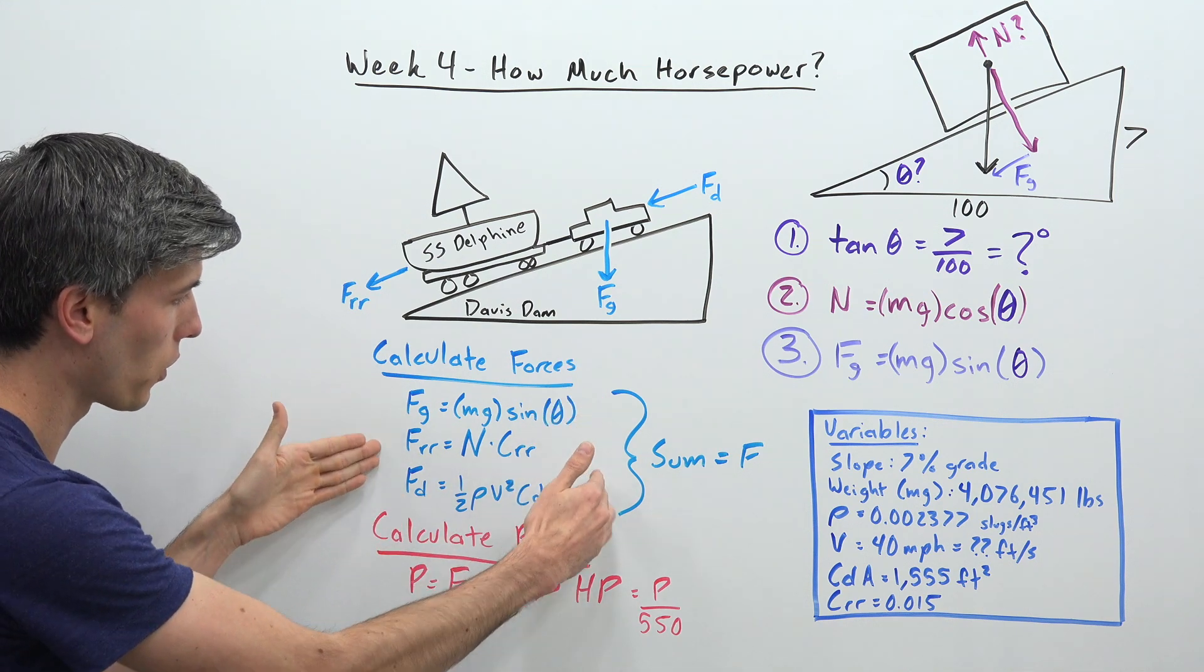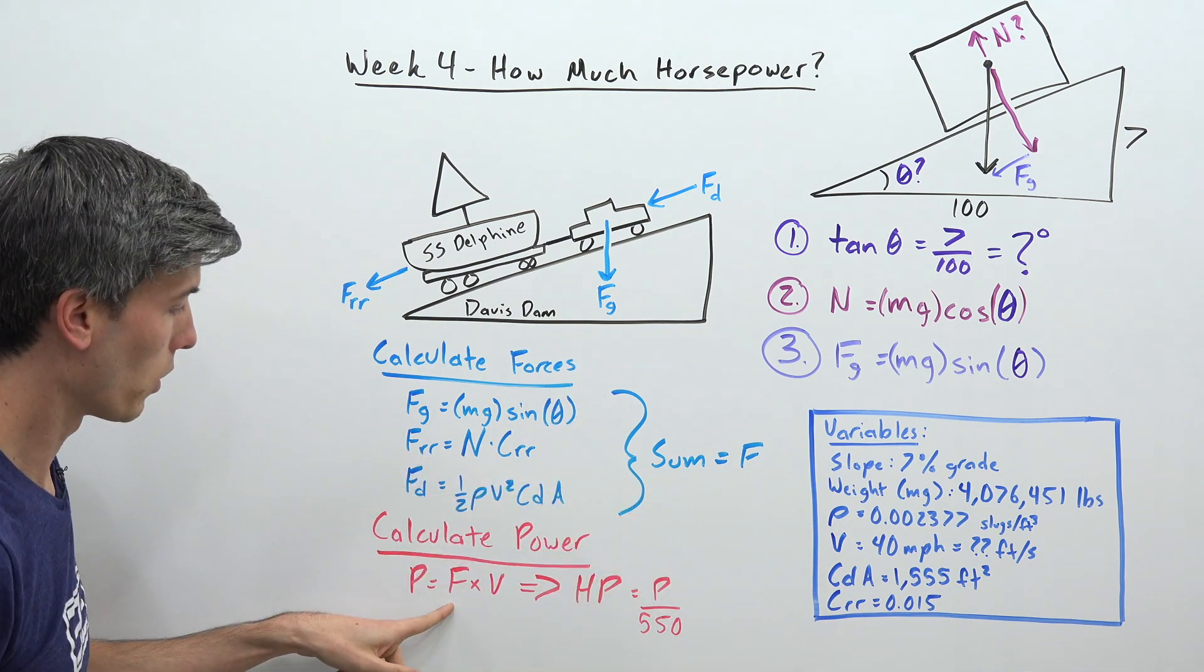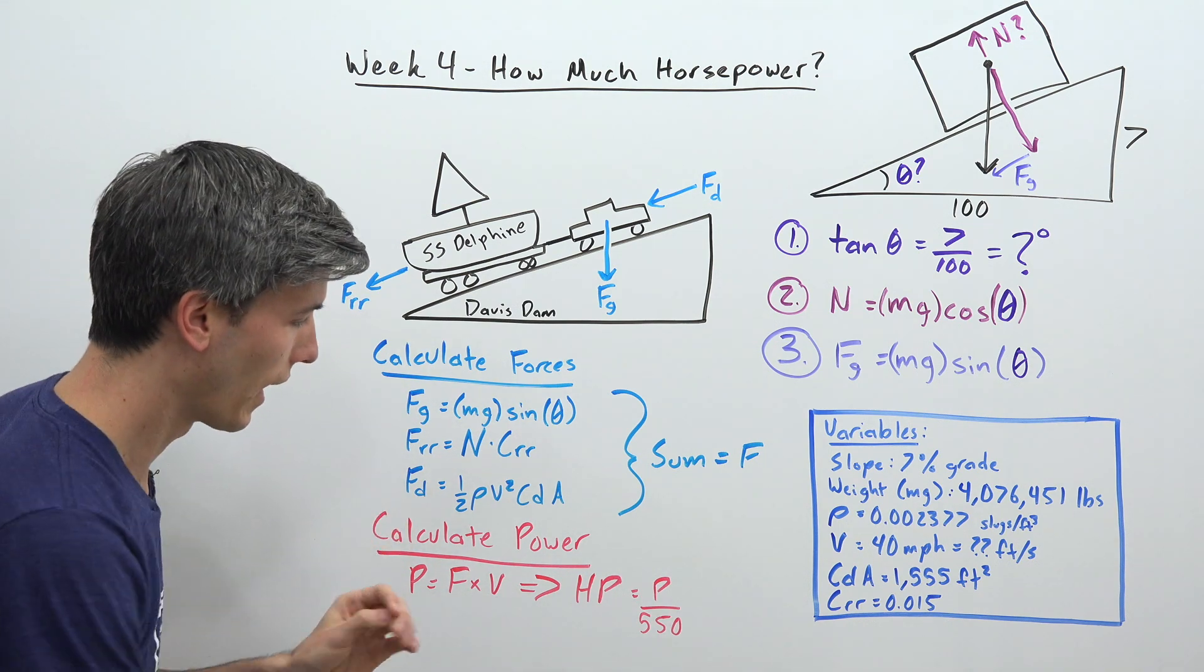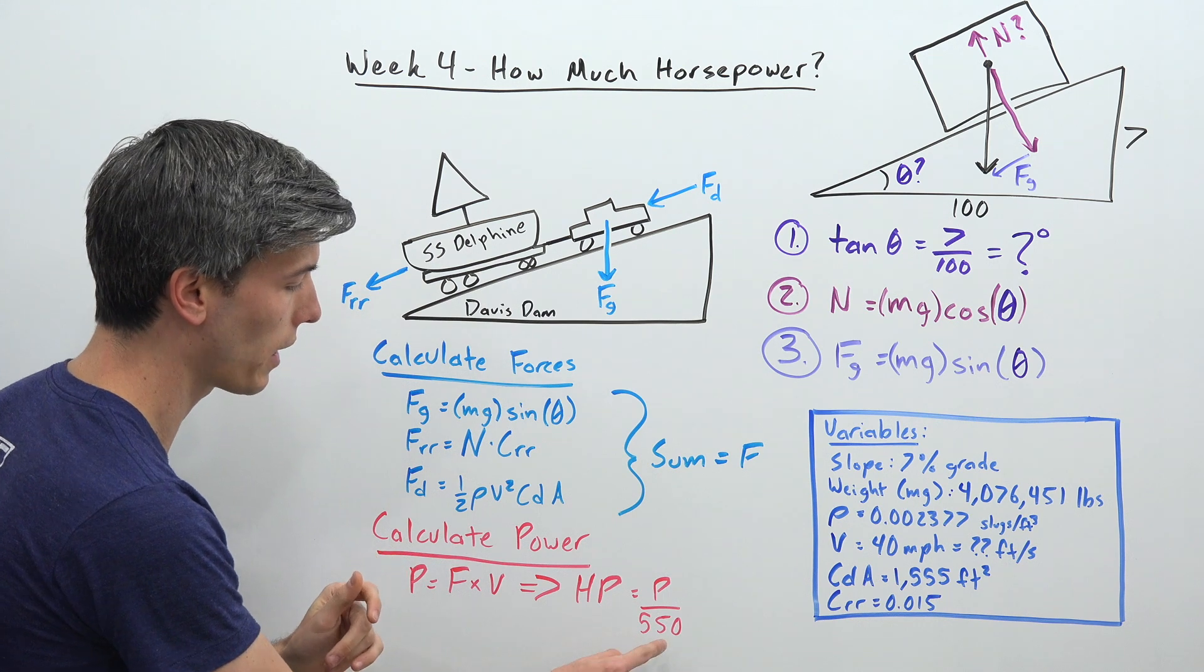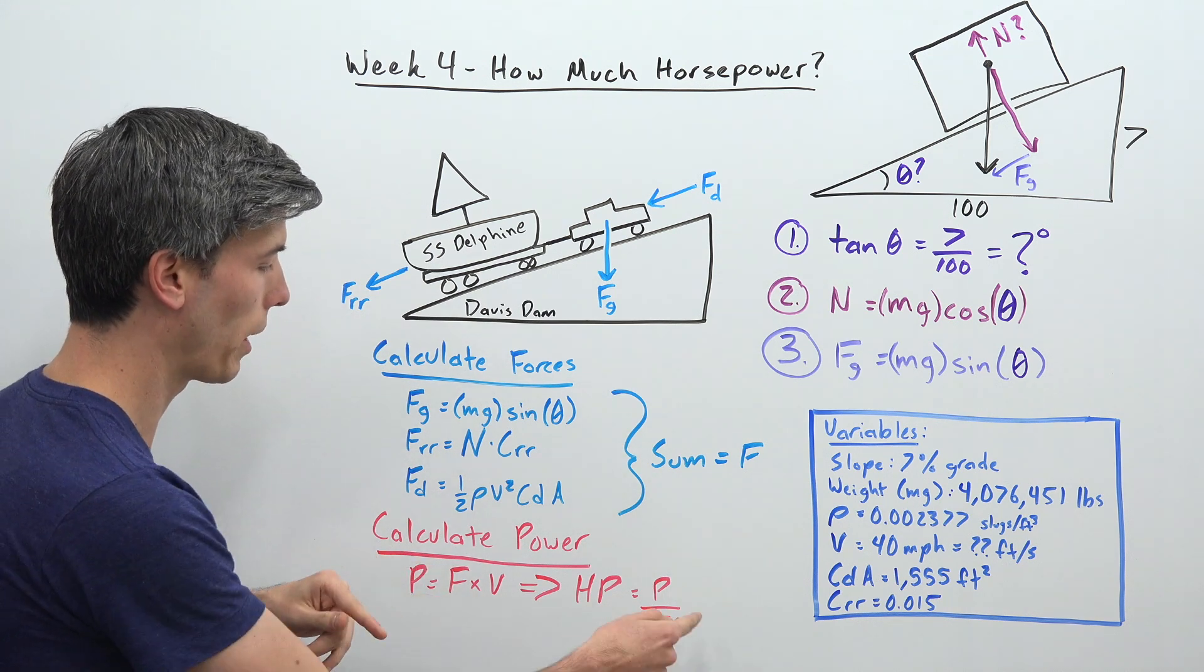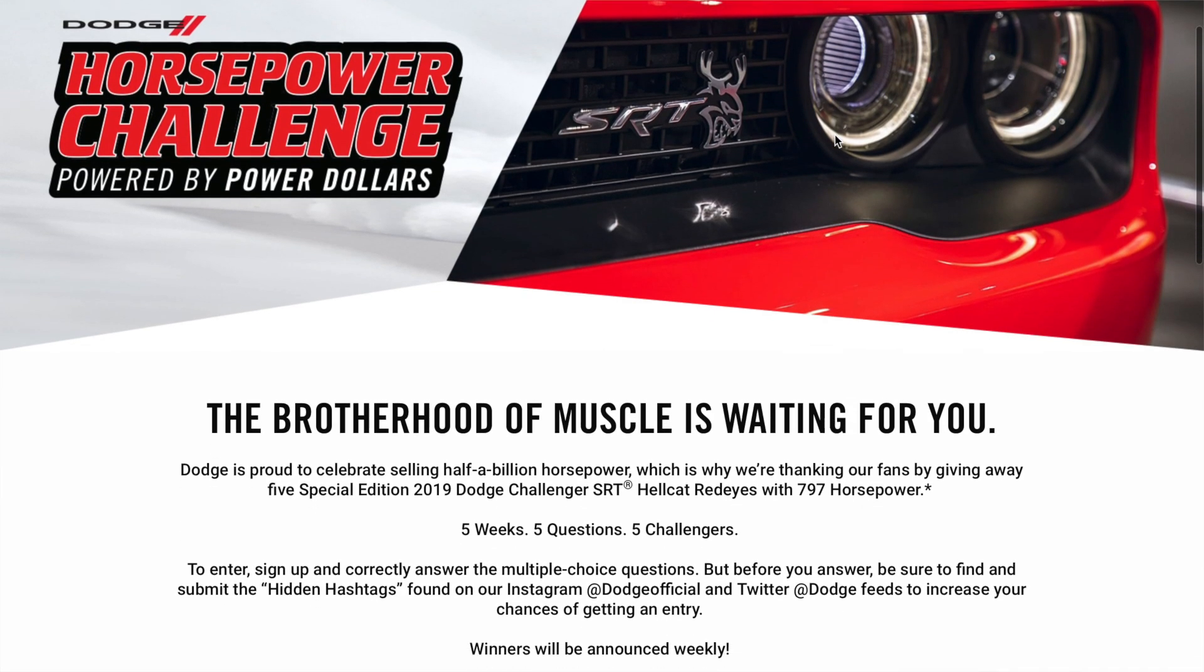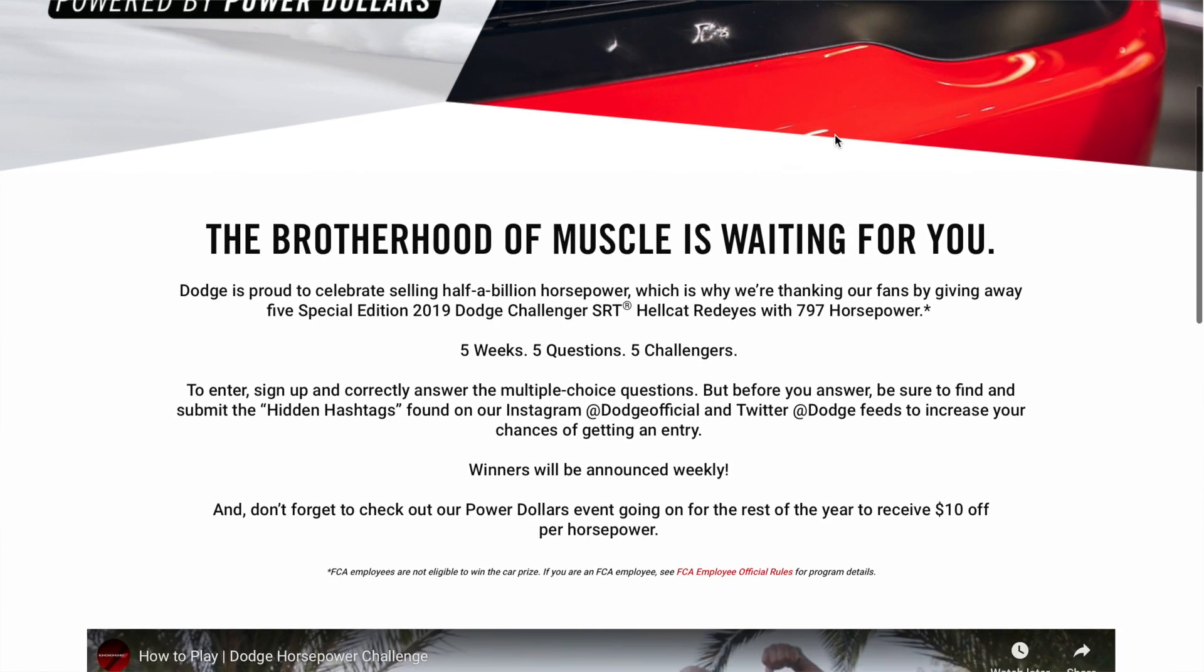Sum all these forces together, that gives you your F. Multiply F by velocity and then we're going to have our power figure. And then the final step is to divide that by 550 in order to get our power figure into units of horsepower. You can then submit your answer at DodgeHorsepowerChallenge.com. Good luck!